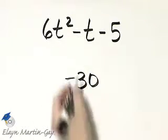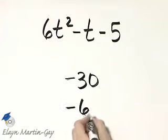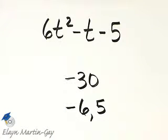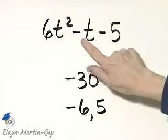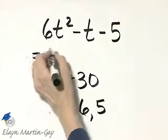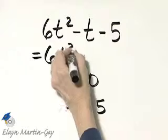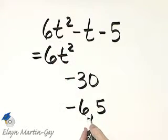Product negative 30, sum negative 1, that would be negative 6 and 5. Correct product, correct sum. So remember what you do, you rewrite the middle term using these coefficients.